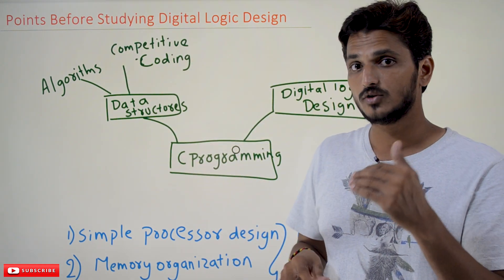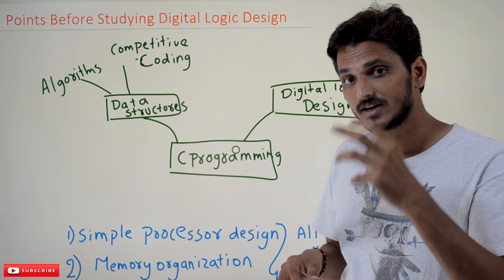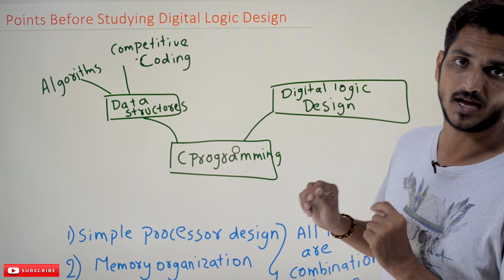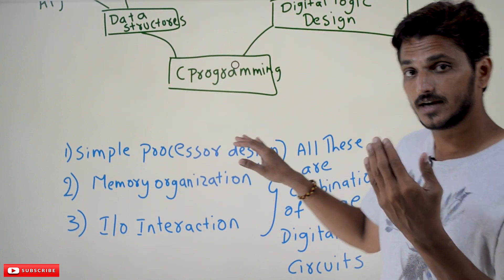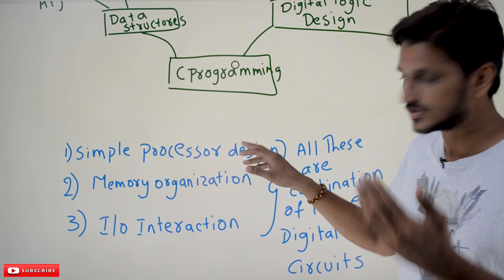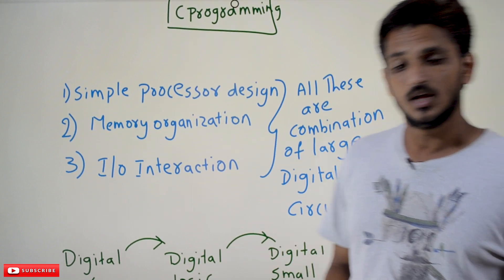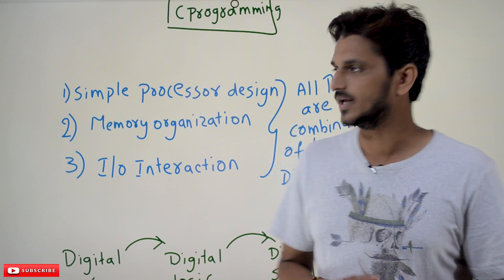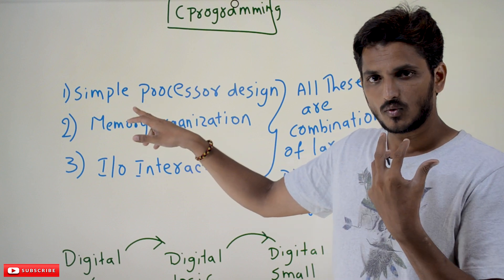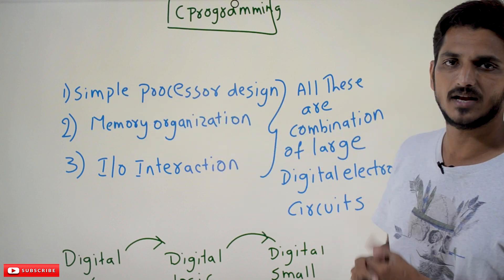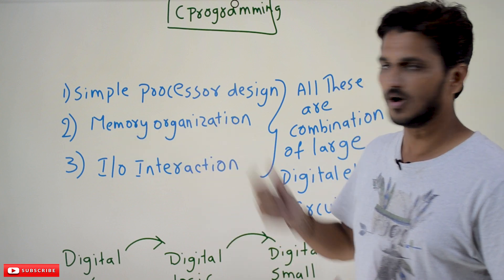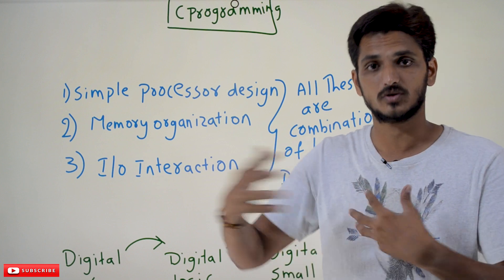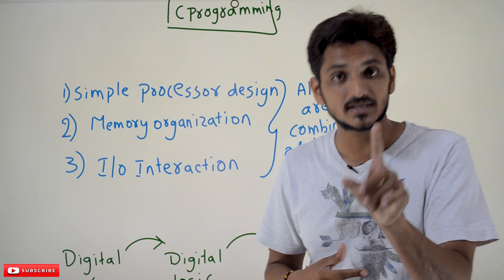In this video we are going to understand what level of understanding you are going to get after completion of digital logic design. When we discussed the need for hardware understanding for computer science students, we established that a CSE student has to understand: a simple processor design, how the memory is organized, and how I/O devices are going to interact with memory and processors. This is the level of understanding needed.